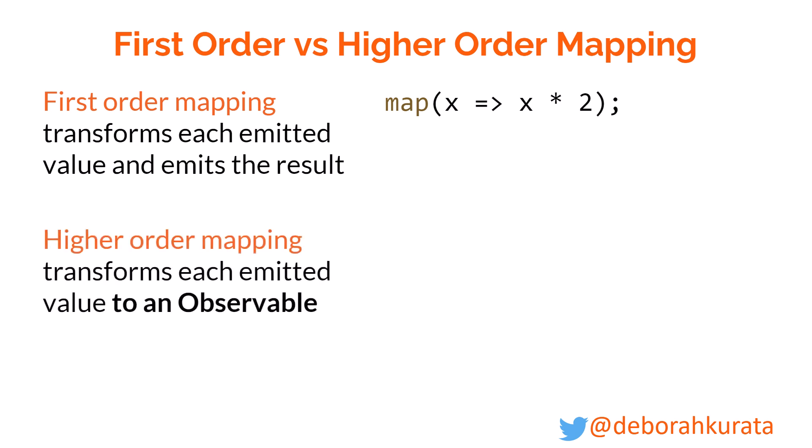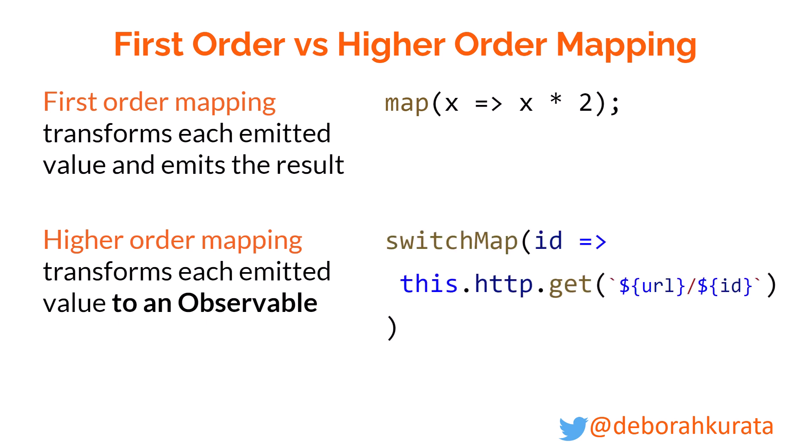Higher-order mapping transforms each emitted item into another observable. Here we're taking an ID — we're getting a stream that's going to be providing us an ID — and we're transforming that using the HTTP GET to go retrieve more data, which is going to give us back another observable. That's the key difference between first-order and higher-order mapping.